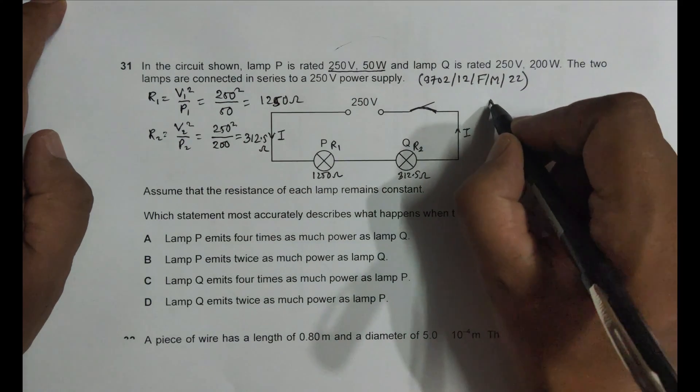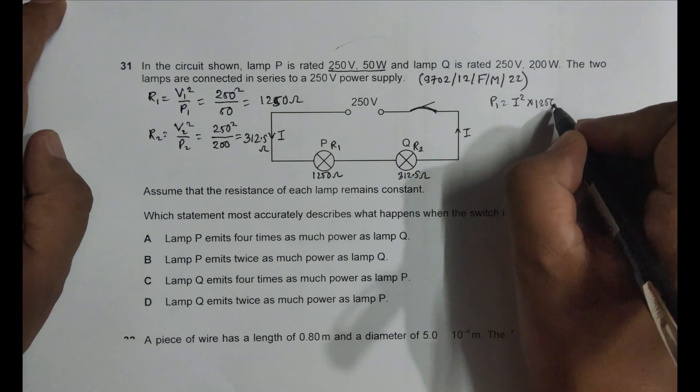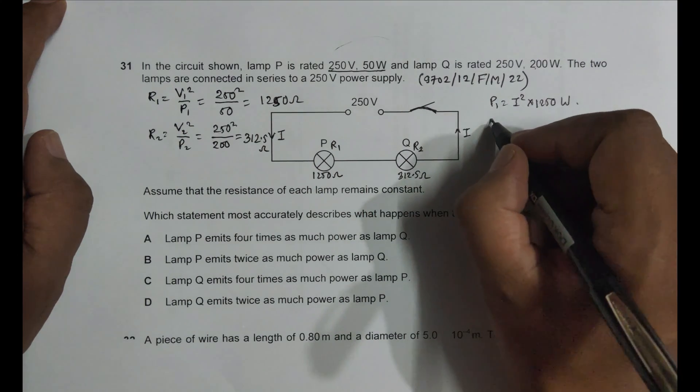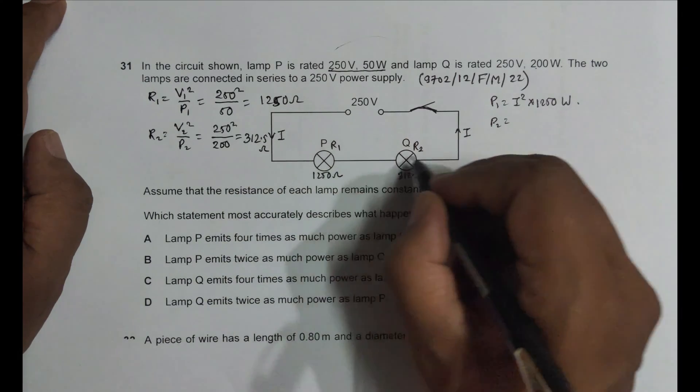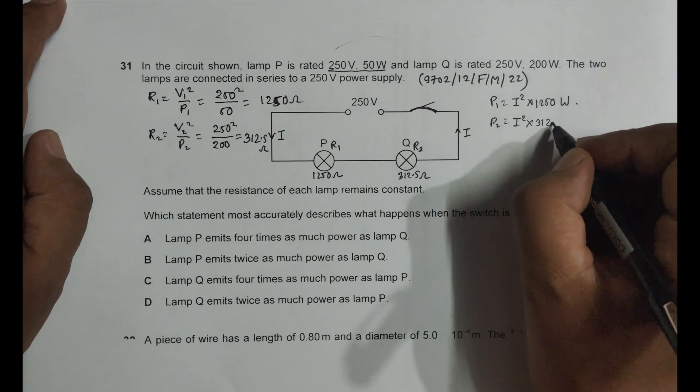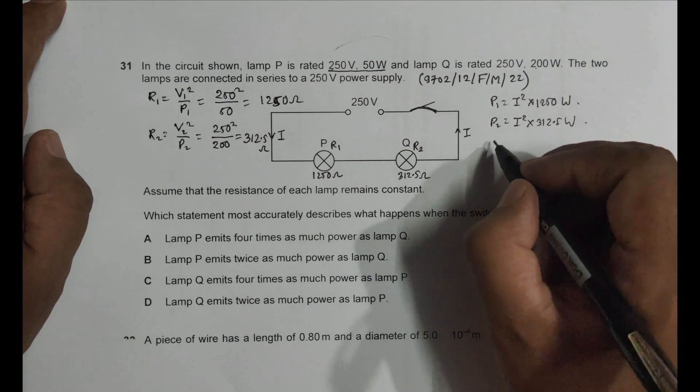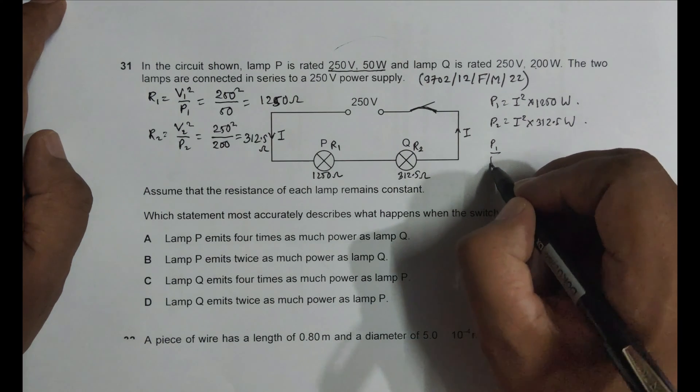Now, since the current is constant, the power radiated by this thing is equal to, power 1 is equal to I squared into 1250 watts, and power 2 is equal to same current, I squared into 312.5 watts.